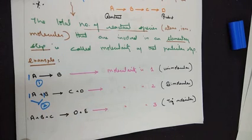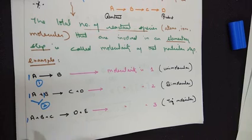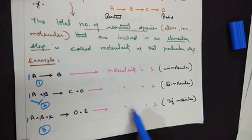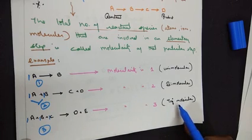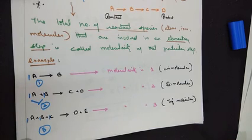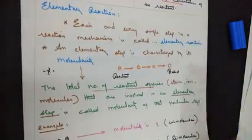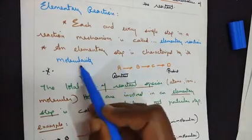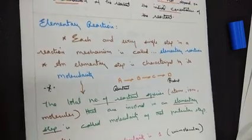Moving to the third category: one mole of A, one mole of B, and one mole of C — when we add the numbers, the answer is three. Hence the molecularity is three in this case. It's also called a tertiary reaction or a trimolecular reaction. I hope the concept of elementary reaction, elementary step, and molecularity is clear.